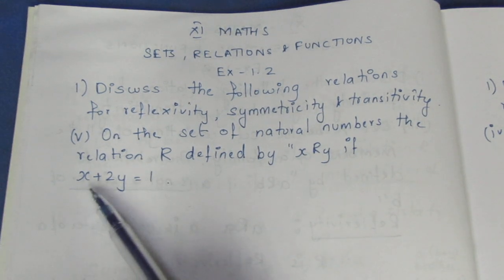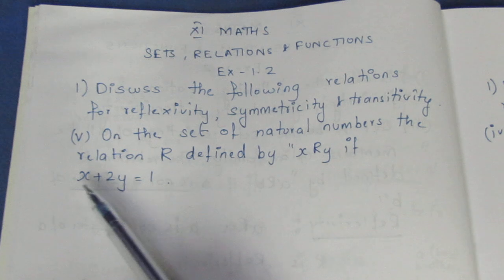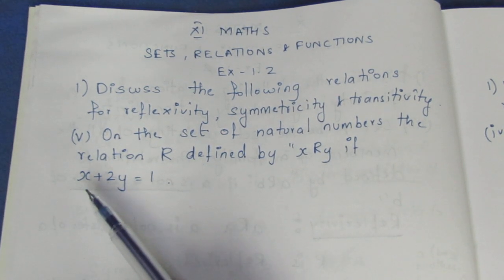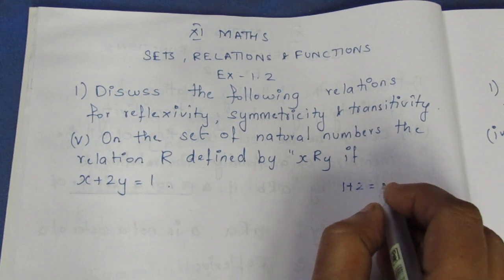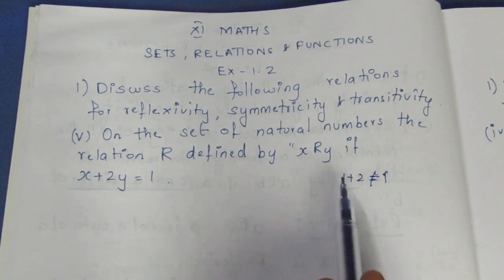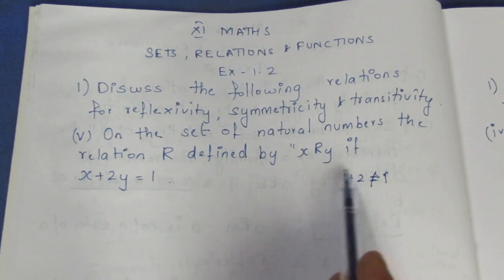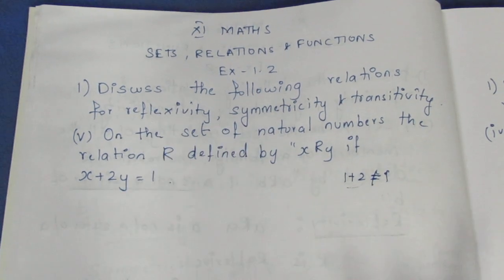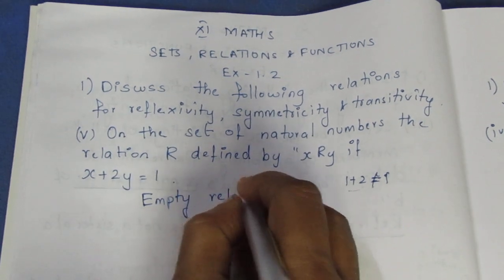Now x and y are natural numbers: 1, 2, 3, 4 and so on. If we substitute the least natural number x=1, then 1 plus 2 into 1 equals 3, which is not equal to 1. Since even the least values give a result greater than 1, this is an empty relation.